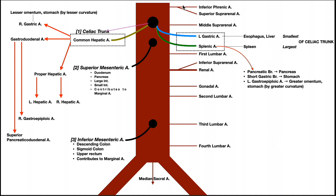First, we have a branch coming off right after the aorta descends through the aortic hiatus of the diaphragm, called the inferior phrenic artery. There is also a superior phrenic artery that branches off the thoracic aorta just before the aortic hiatus. The inferior phrenic artery supplies mainly the lower part of the diaphragm, while the superior phrenic artery supplies the upper part.